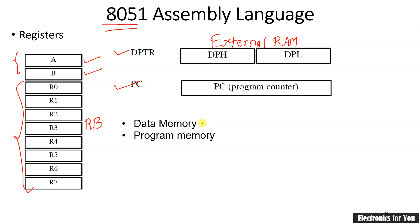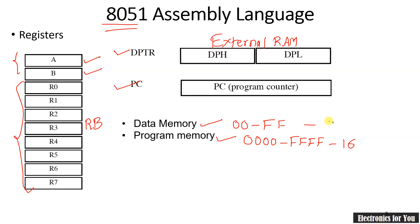Two memories are available, which may be internal or external: data memory and program memory. Internal data memory starts from 00h and ends at FFh, making it 8-bit. Program memory ranges from 0000h to FFFFFFh, meaning it may be 16-bit. When external RAM is connected, data memory will also be 16-bit. Internal program memory is 4 kilobytes, whereas external program memory may extend up to 16 kilobytes.